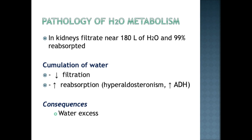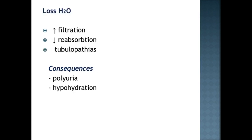Consequences of sodium accumulation include oliguria, hyperhydration, and hypervolemia with increased blood pressure. Regarding water metabolism: accumulation of water is associated with decreased glomerular filtration rate or increased reabsorption — as seen in endocrinopathies like primary or secondary hyperaldosteronism and inappropriate ADH synthesis — clinically manifesting as water excess and disorders of water-salt balance. Loss of water is associated with decreased reabsorption due to enzymopathies, energy deficiency, tubulopathies, or increased filtration, with consequences of polyuria and hypohydration.